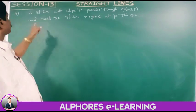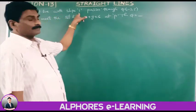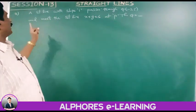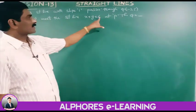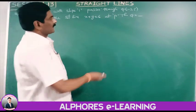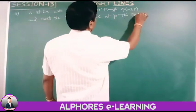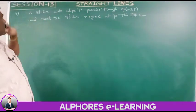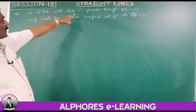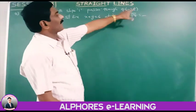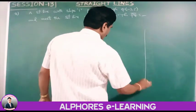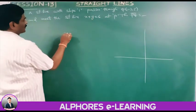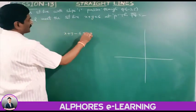Fourth problem: a straight line with slope 1 passes through Q(minus 3, 5) and meets the straight line x plus y equals 6 at P. Find the distance PQ. The line x plus y equals 6 can be written as x plus y minus 6 equals 0.